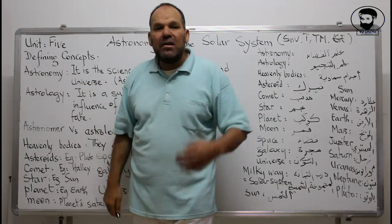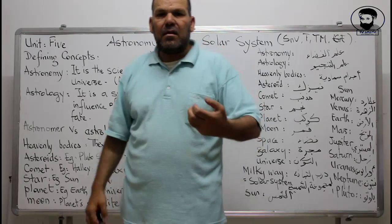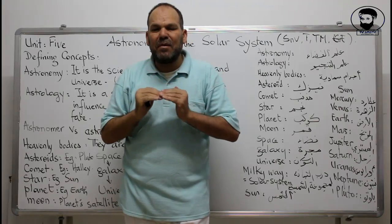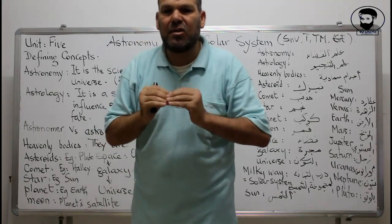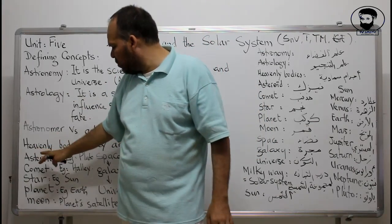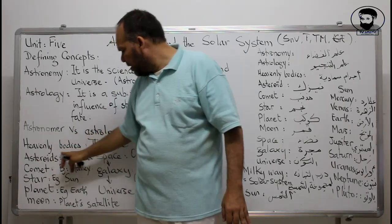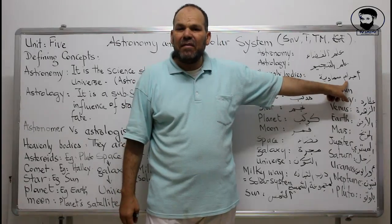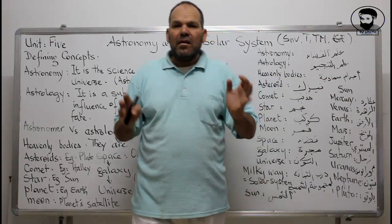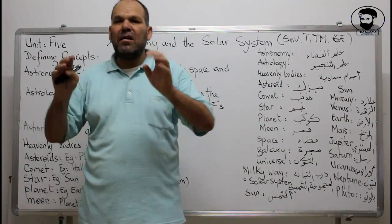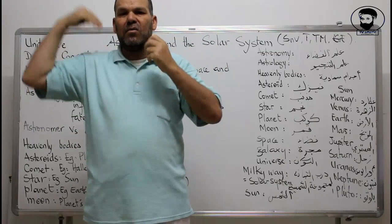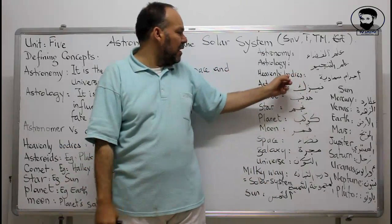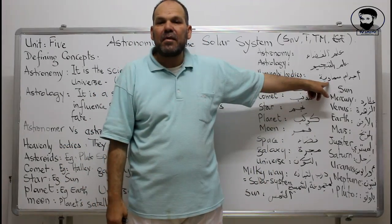Astronomy and Astrology are two words you may find in your unit. I wanted to make the difference between what is meant by Astronomy and what is meant by Astrology. Astronomy is the study of space and the universe. Now let's go step by step and see the words we find in this unit. The first concept we come to is the heavenly bodies — the parts you find in space.